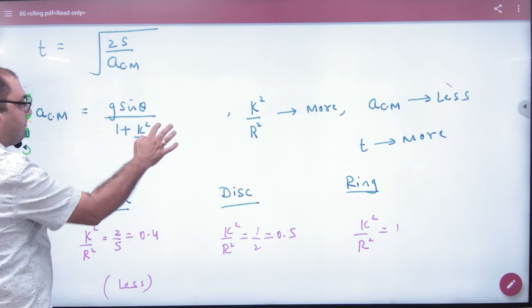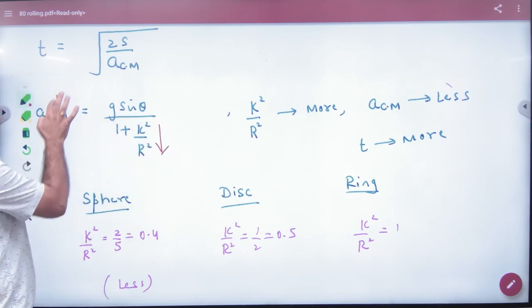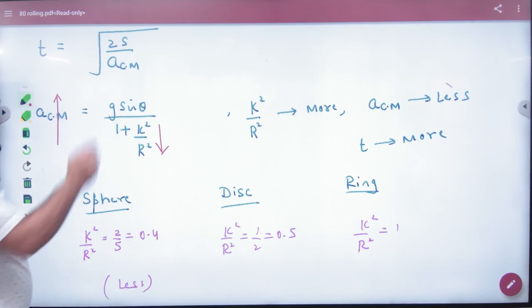When k²/R² is the highest, then the acceleration is the lowest. And if the acceleration is the lowest, then the time taken is the highest. So who will come first? Solid sphere.